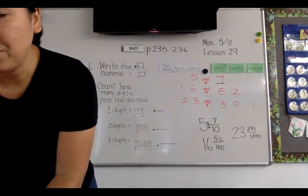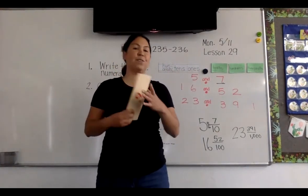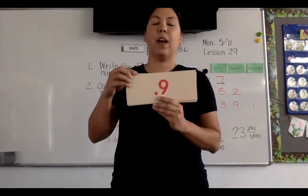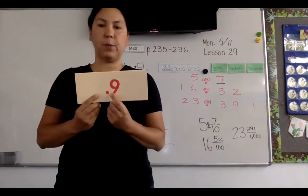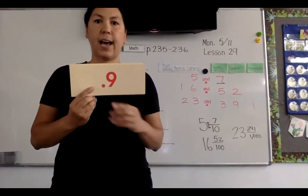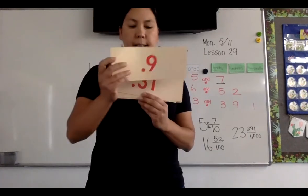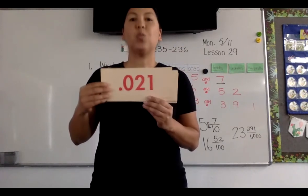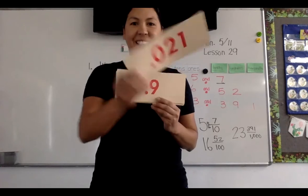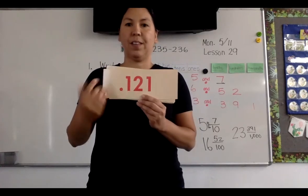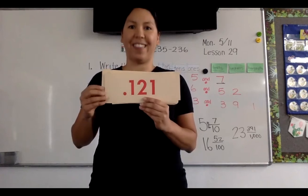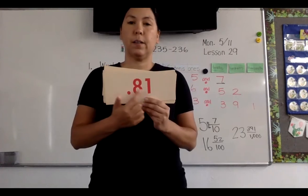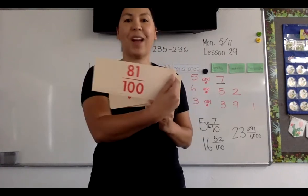Let's do some review flashcards and see if you can read these. Only one digit past the decimal, so we're going to say nine tenths. Written like this: three digits past the decimal — twenty-one thousandths. Three digits again: a hundred twenty-one thousandths. Two digits: eighty-one hundredths.